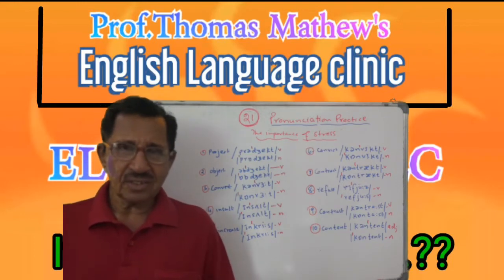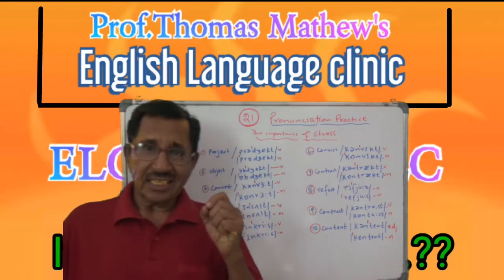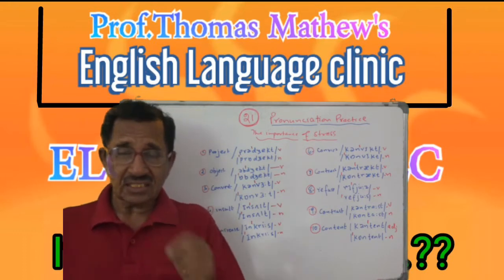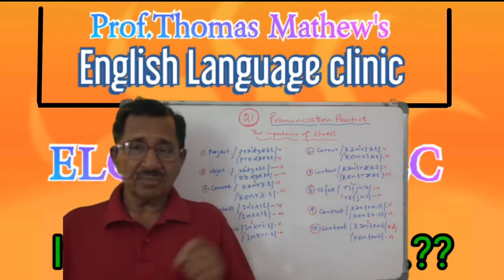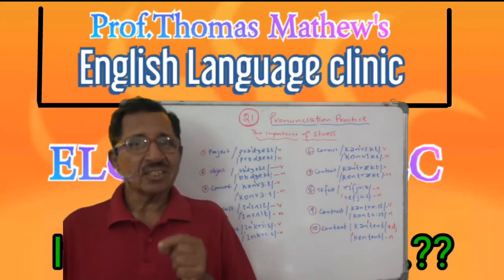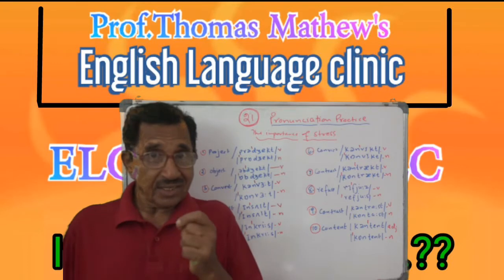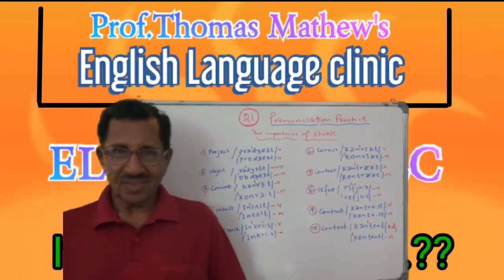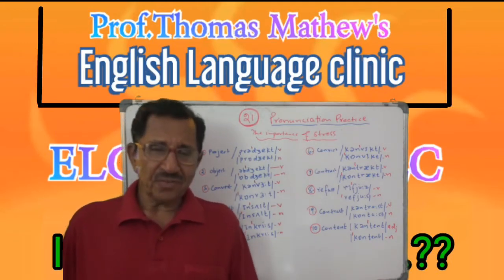Same with the fourth one. 'Insult' is verb — he insulted me. But 'insult' is noun — I will not pardon your insult. You understand that? 'Insult.' 'Insult.'